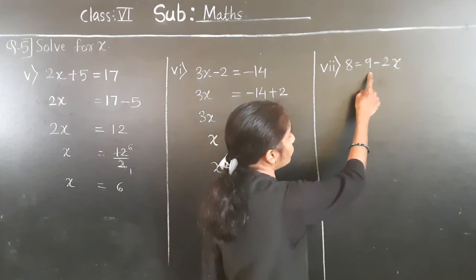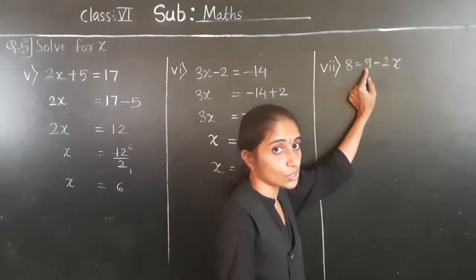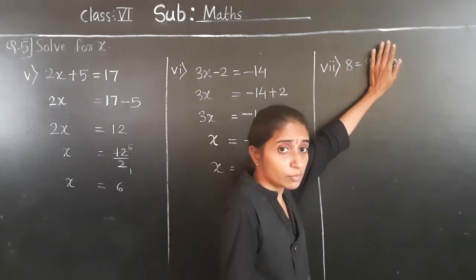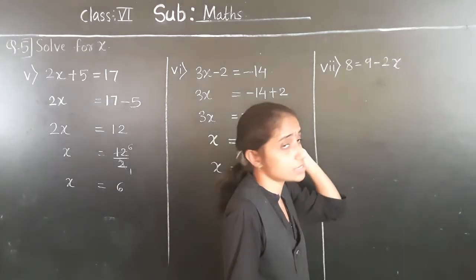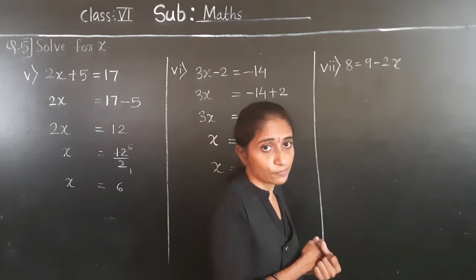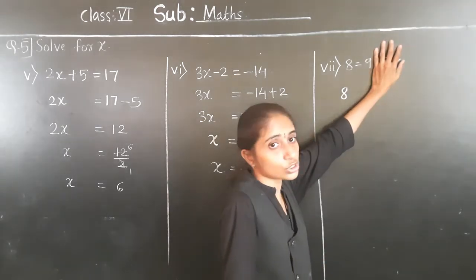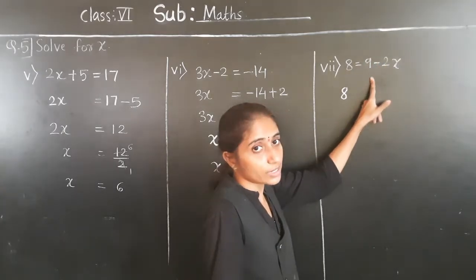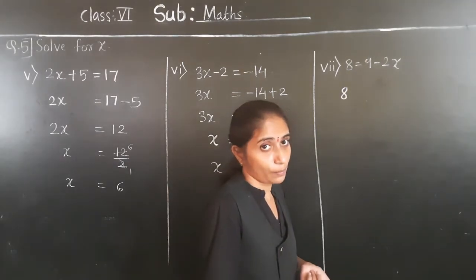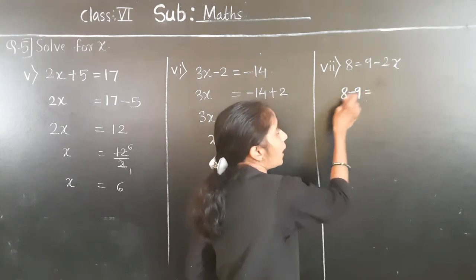Now: 8 is equal to 9 minus 2x. Which number is alone? 9 is alone — 9 is not with the variable. Don't touch the number with the variable. So we will transfer 9 to the left hand side. Before 9 there is no sign, so it is plus — if we transfer 9 to the left side, it will become minus.